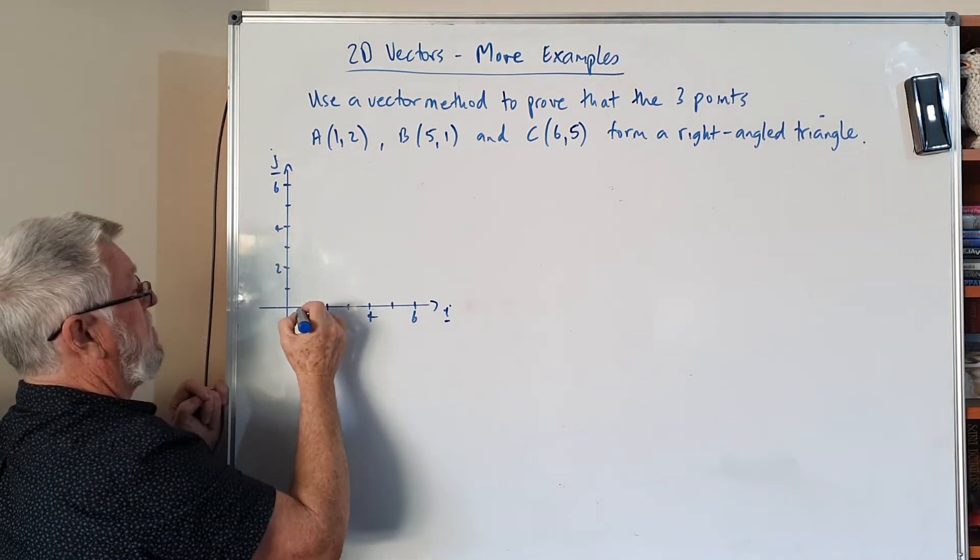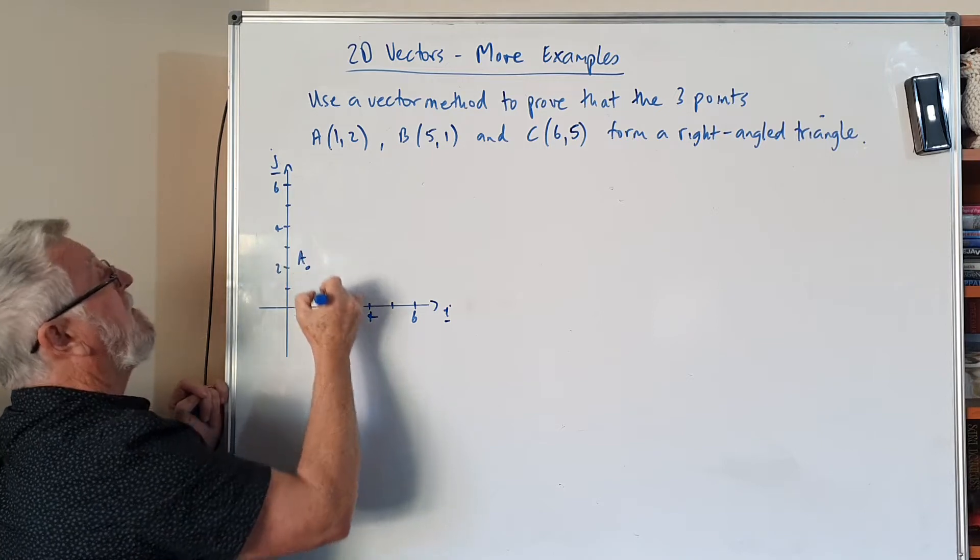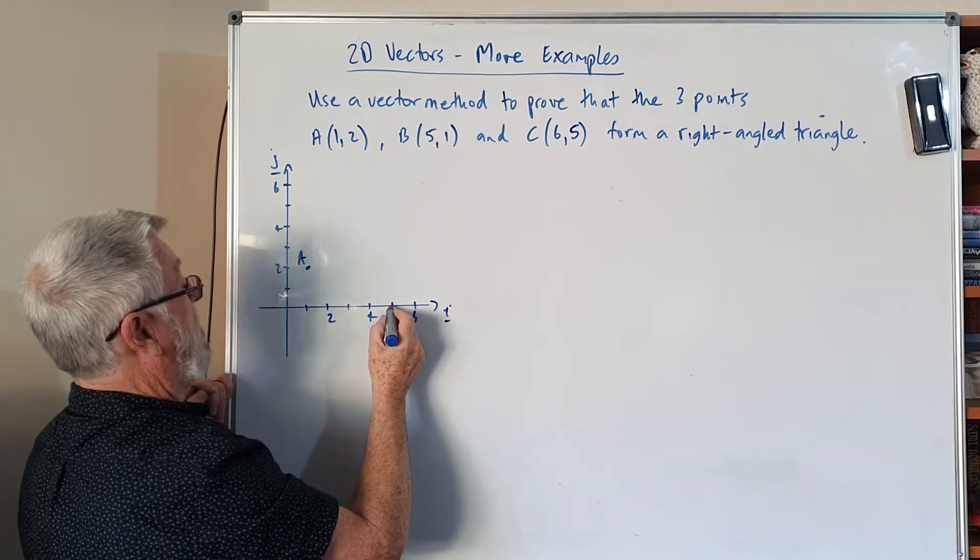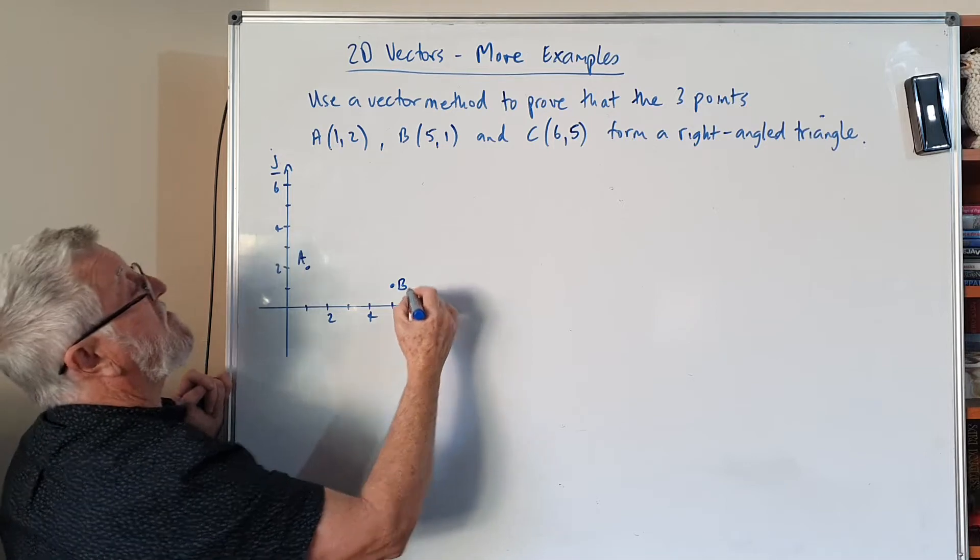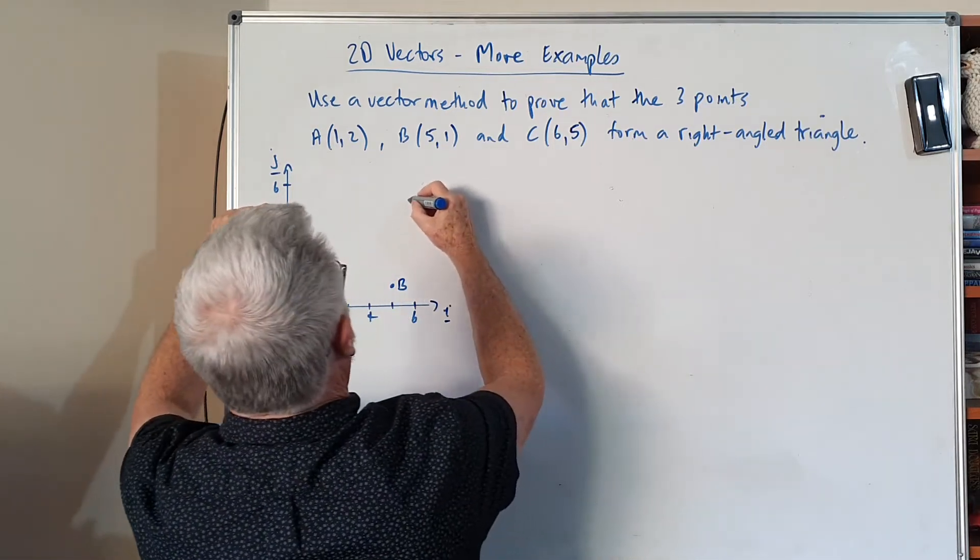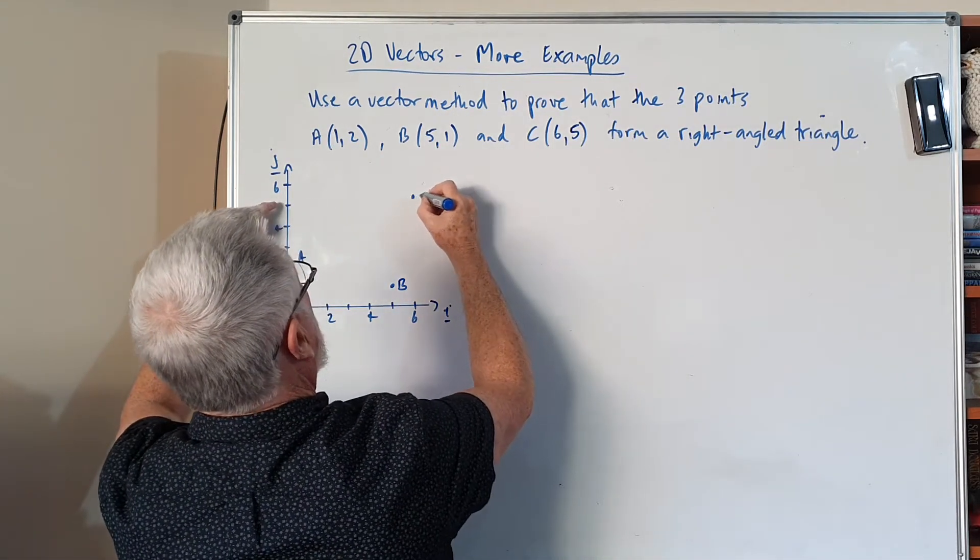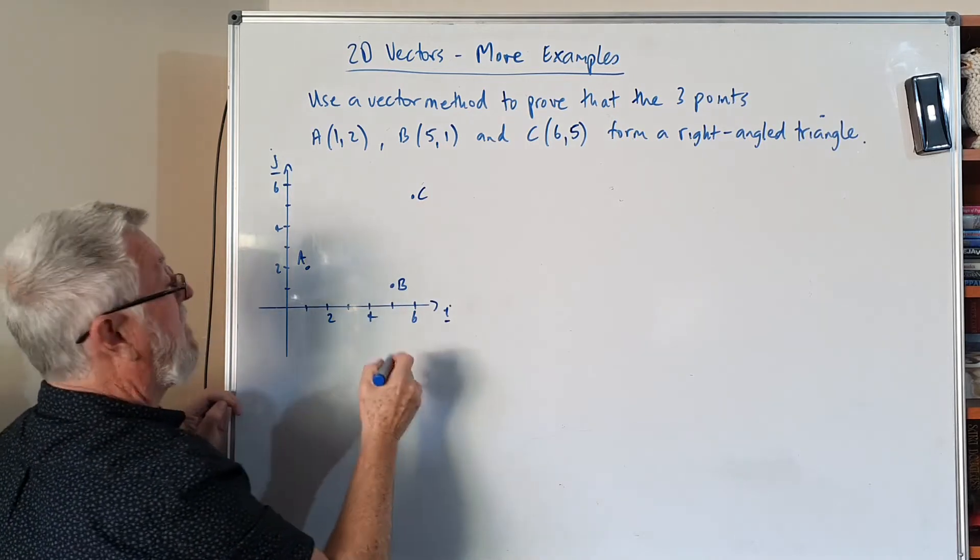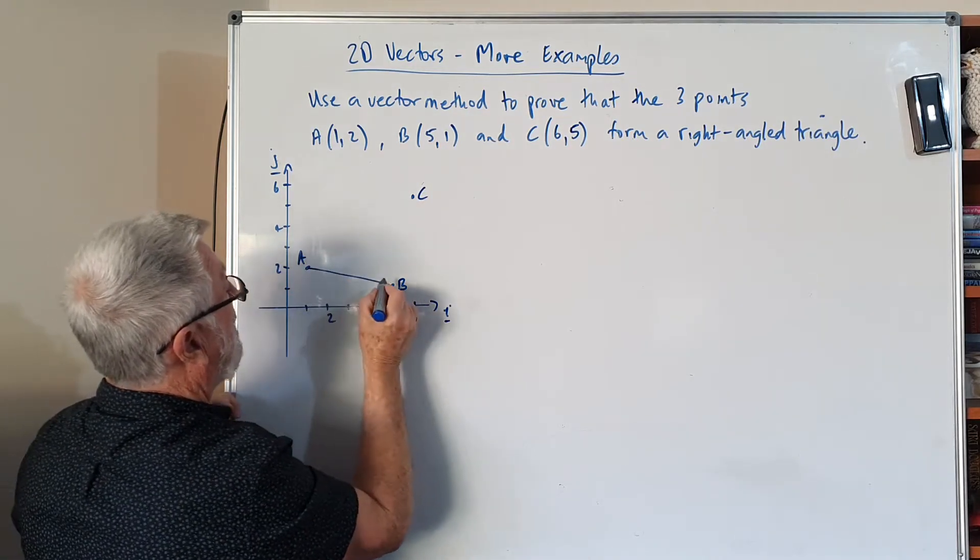So I've got one two, so A would be about there. B is five one, so five one would be about there. And C is six five, trying to do it accurate on the whiteboard. It's hard to do and I've got that there. Now if I had a ruler I could draw that up neatly.